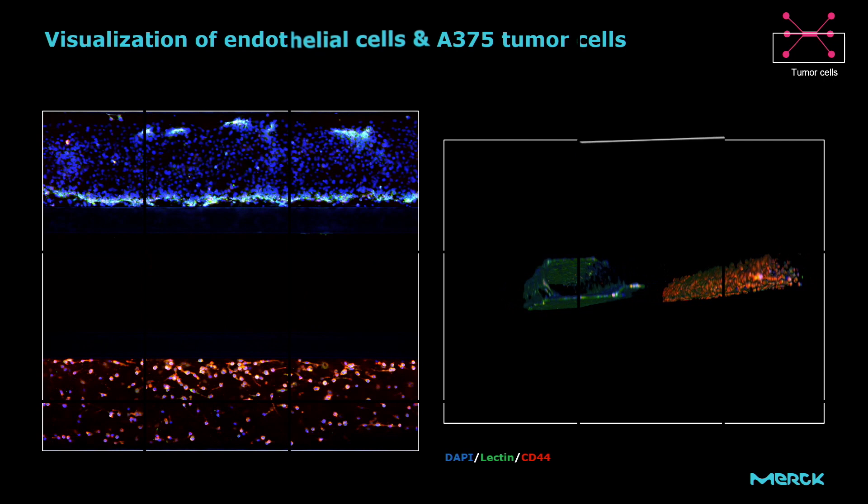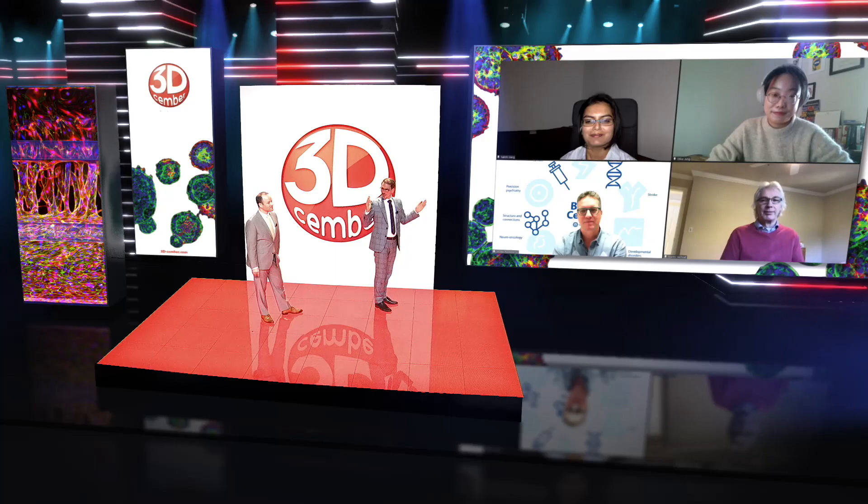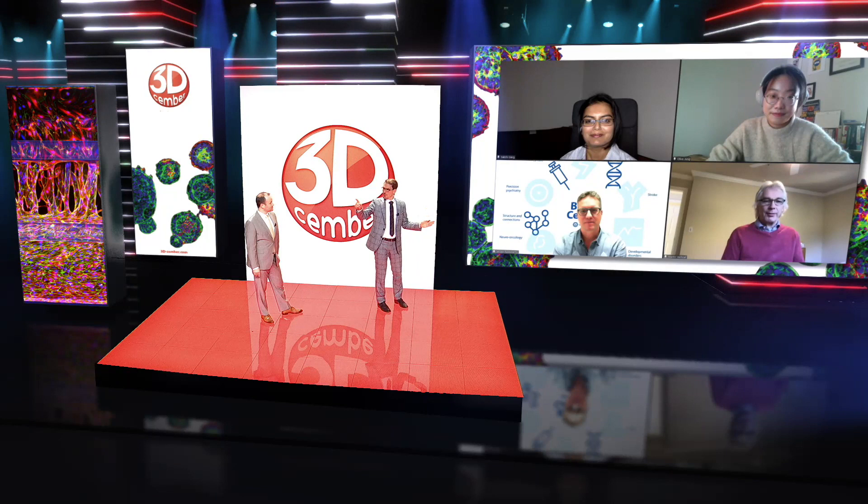We've had T cells migrating towards our chemokines. It's really nice to see the hollow tube and the tumor cells. We have a T cell that is interacting with one of the tumor cells.